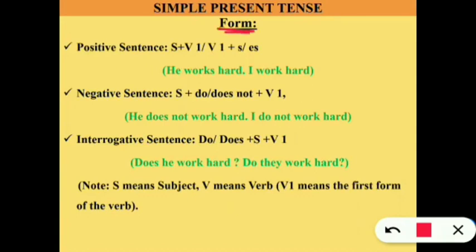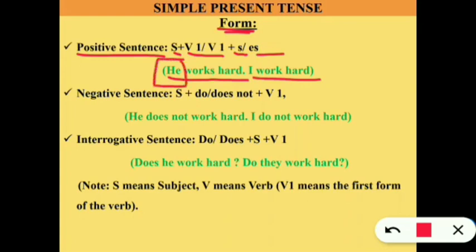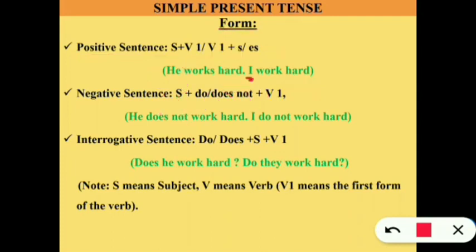Now we move to simple present tense. In a positive sentence, the form is: subject + verb 1 (with 's' or 'es' for singular subjects). Example: 'He works hard' — the subject 'he' is singular, so we use the singular verb form with 's.' 'I work hard' — 'I' is an exception, so with 'I' we use the plural verb form without 's.'